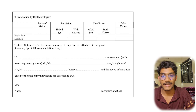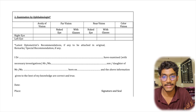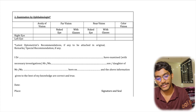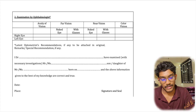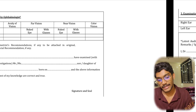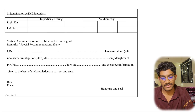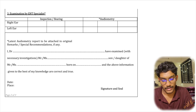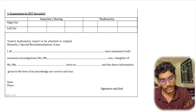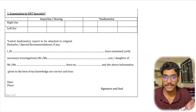Apart from vaccinations, you have to visit an ophthalmologist for an eye examination. The doctor will fill out the form and authenticate the information with their seal and signature. After that, you have to visit an ENT specialist for a hearing test and audiometry, and the doctor will similarly authenticate the information.